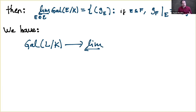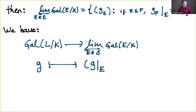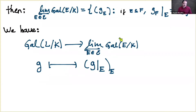We have a homomorphism of groups from the Galois group Gal(L/K) to this projective limit, which just consists of taking the restriction of an automorphism of L fixing K to every E in the family. One can verify this gives a compatible sequence and is a group homomorphism. Moreover, since each extension E is finite, the Galois groups Gal(E/K) are finite, so this projective limit of finite groups is a profinite group.